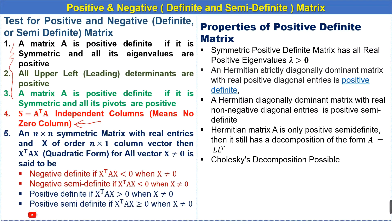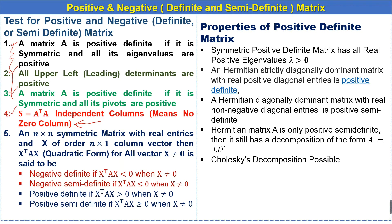We are studying positive and negative definite and semi-definite matrices. In previous lectures we solved four examples related to the first through fourth tests of positive and negative definite and semi-definite matrices. In this lecture we will solve an example related to the fifth test.